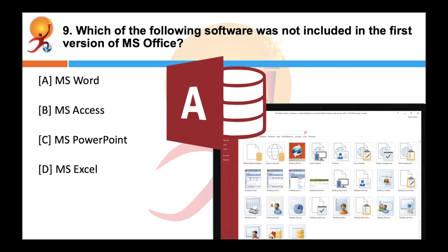Which of the following software was not included in the first version of MS Office? The correct answer is B — Microsoft Office was announced in 1988, and the first version of Office contained Microsoft Word, Microsoft Excel, and Microsoft PowerPoint only.